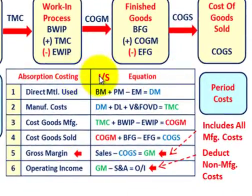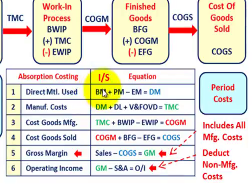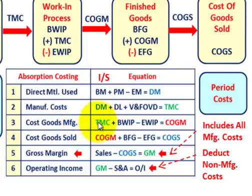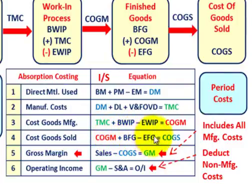Now let's look at the income statement for absorption costing — there are six steps. Step one: direct materials used equals beginning materials plus purchased materials minus ending materials. Step two: total manufacturing costs equals direct materials used plus direct labor plus variable and fixed factory overhead. Step three: cost of goods manufactured equals total manufacturing costs plus beginning work in process minus ending work in process.